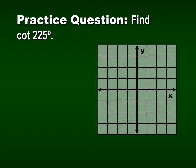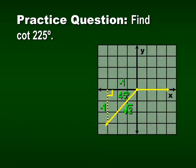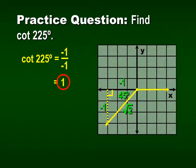Let's find the cotangent of 225. So 225 is in the third quadrant. 225 minus 180 is 45, so we have a 45-45-90 triangle where the legs are 1 and the hypotenuse is the square root of 2. Since we're in the third quadrant, both x and y are negative. Cotangent is the reciprocal of tangent. Tangent is negative 1 over negative 1, so cotangent is also negative 1 over negative 1, which equals positive 1.